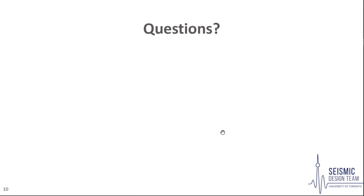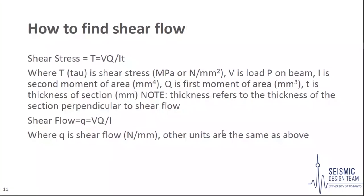After some manipulation of the previous formula, we get the following equation. Shear stress, denoted by tau, is equal to the load on the beam multiplied by the first moment of area, divided by the second moment of area multiplied by the thickness of the section perpendicular to the shear stress. It is measured in kilonewtons per millimetre squared. Shear flow, denoted by q, is the same formula as shear stress except it does not consider shear over the area, only along the lengths of the element — therefore it does not consider thickness. It is measured in kilonewtons per millimetre.